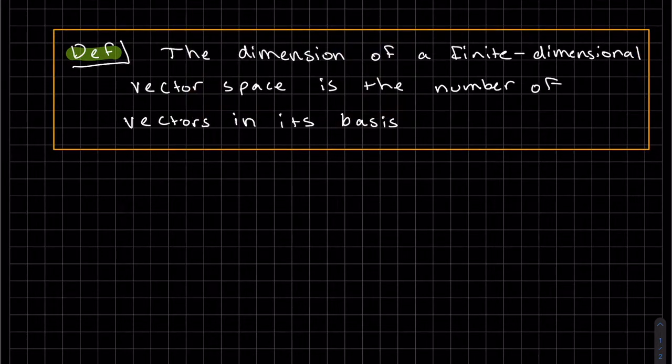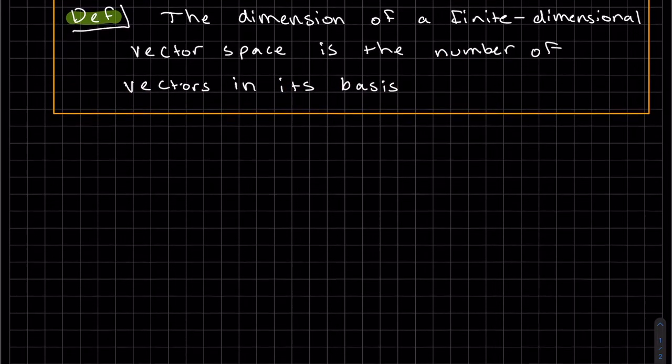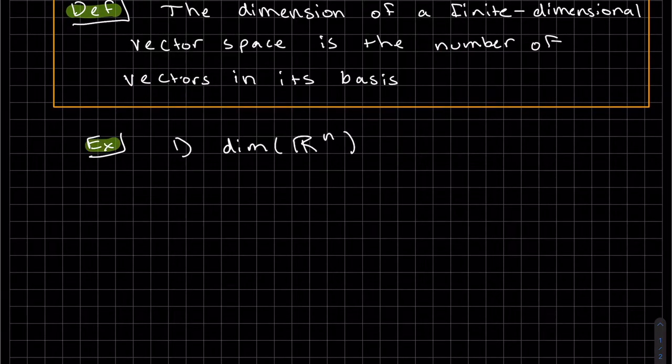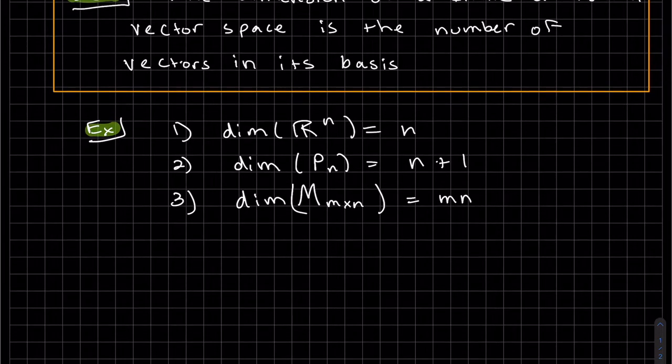The dimension of a finite dimensional vector space is the number of vectors that are in its bases. So let's do a bunch of examples. We know the dimension of rn is just n. The dimension of pn, remember it's n, it's the nth degree polynomial plus the constant, so it's n plus 1. The dimension of a matrix that's in m by n, that's actually m times n, and let's look at an example.